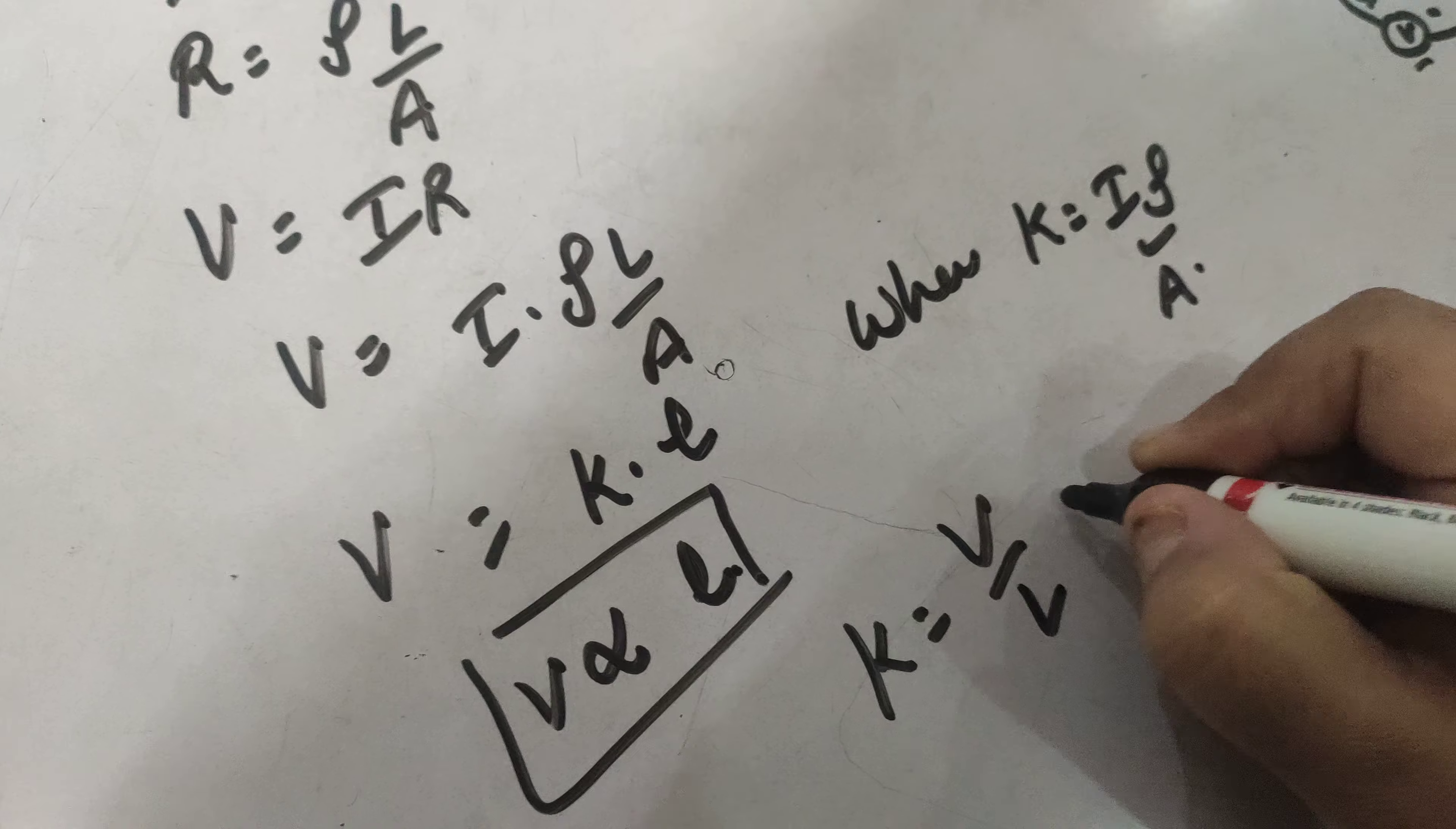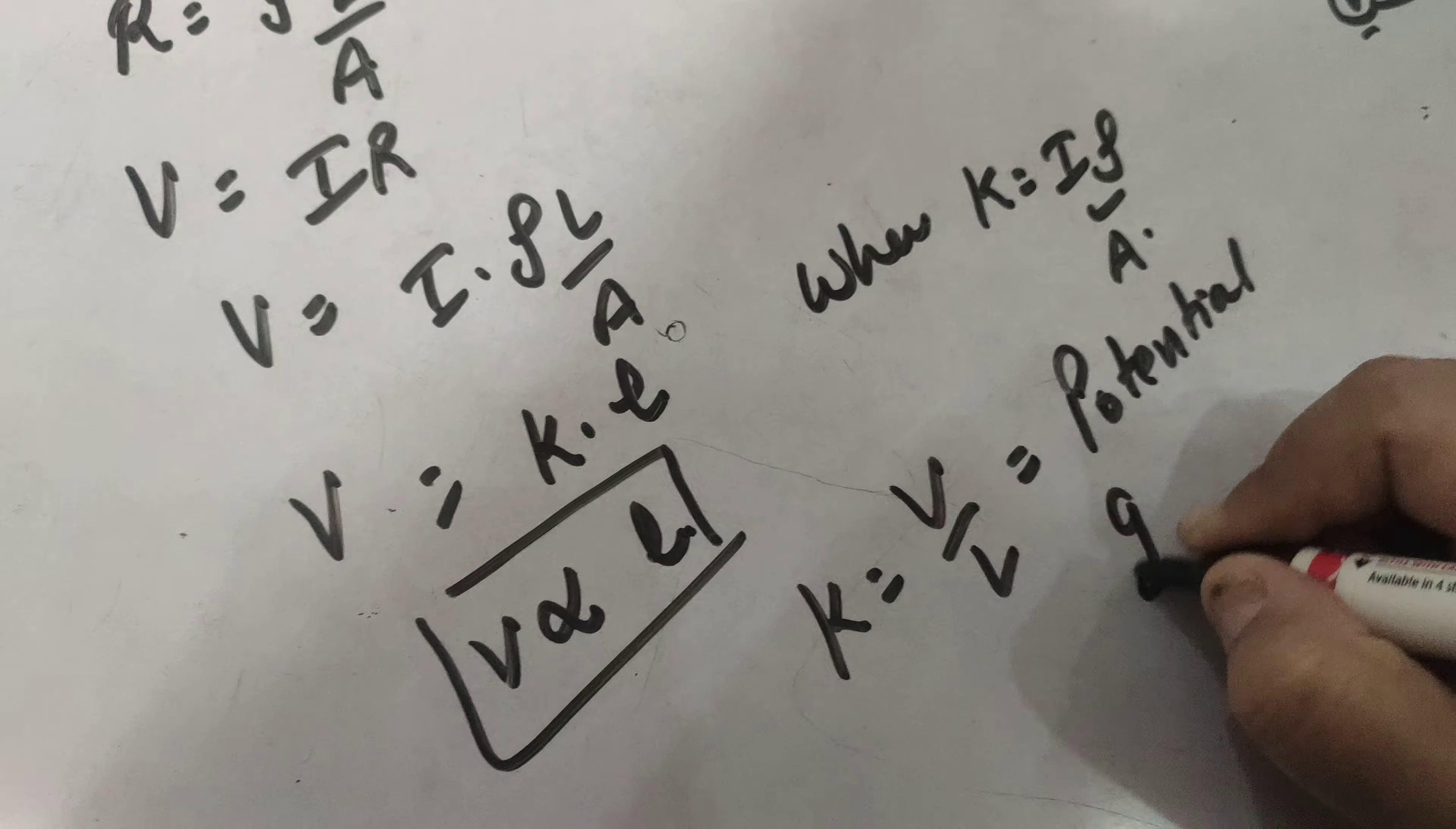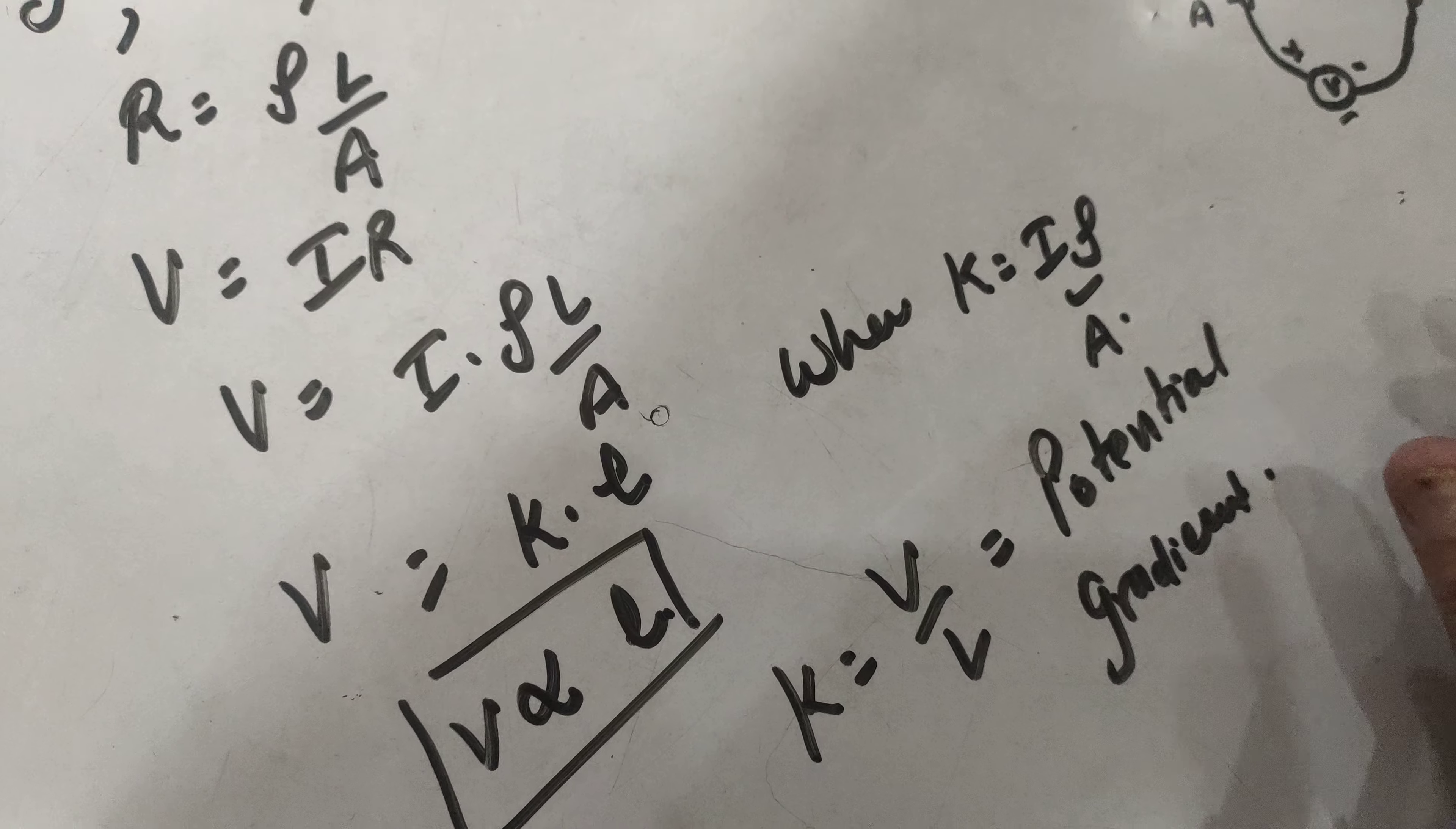K is equal to V by L, called the potential gradient, which is the fall of potential per unit length of the wire.